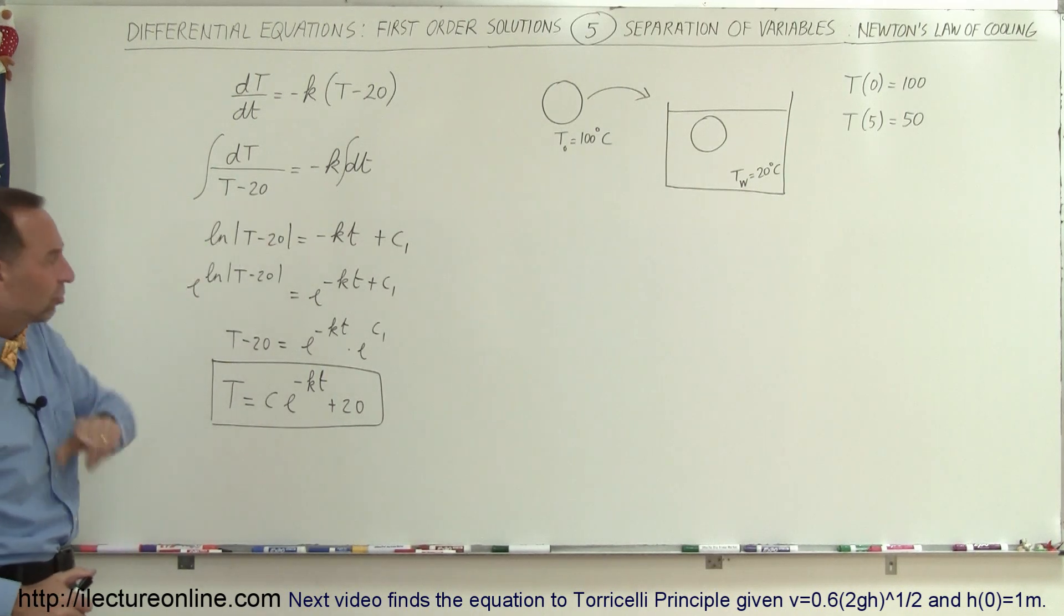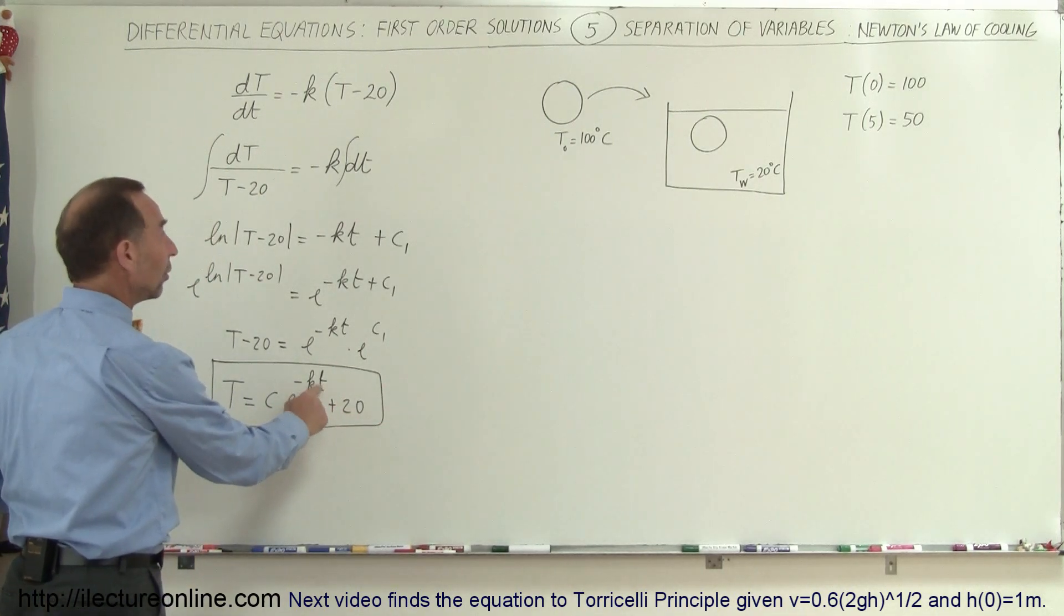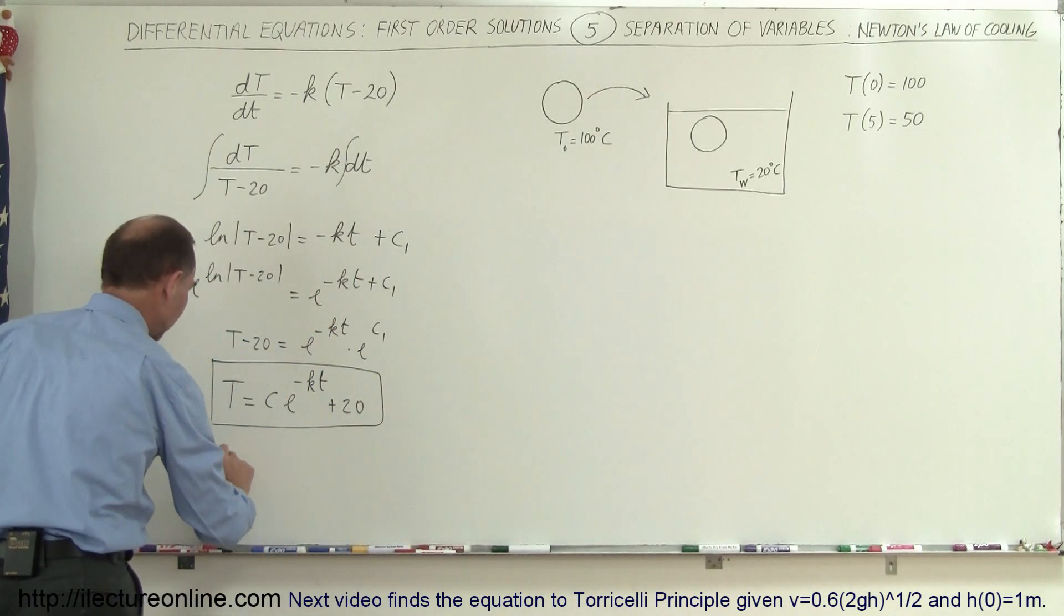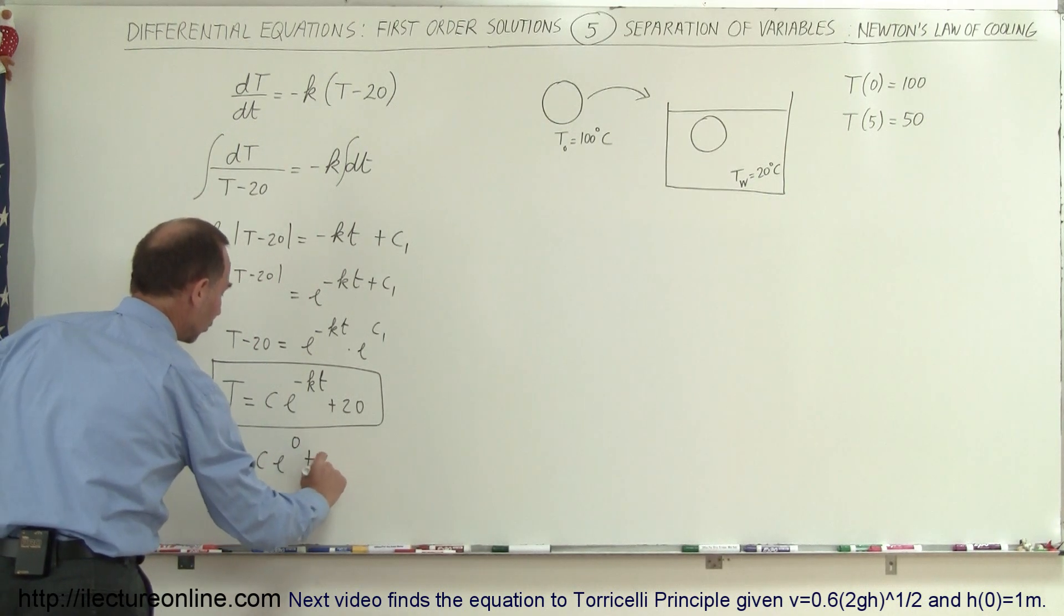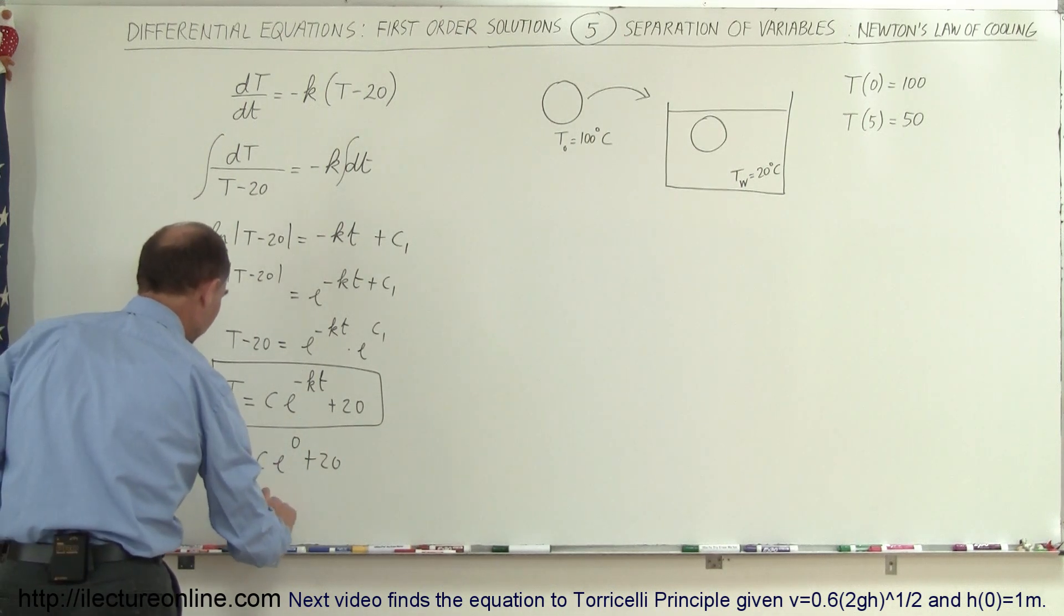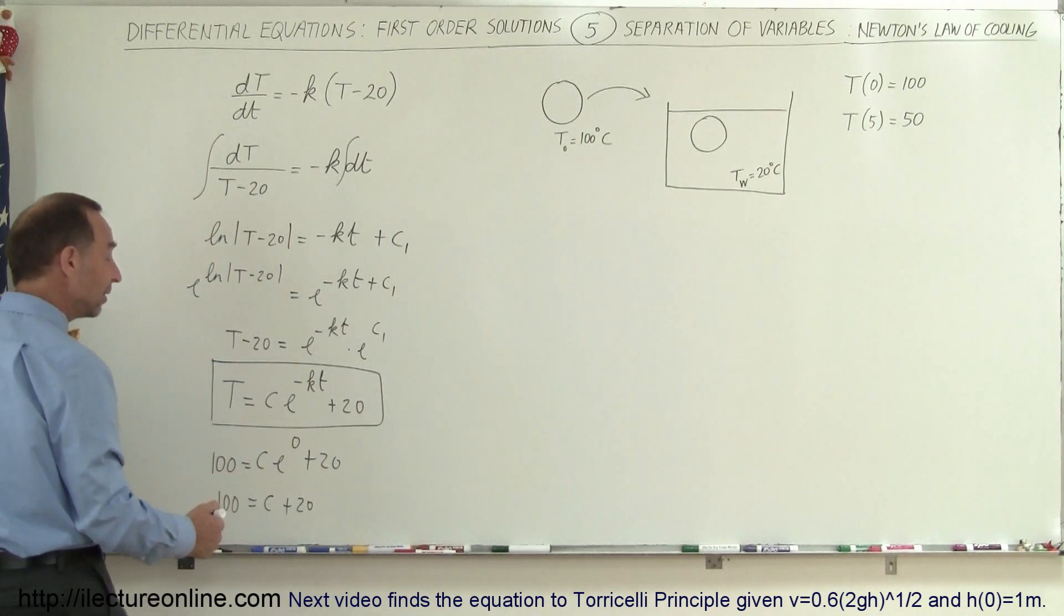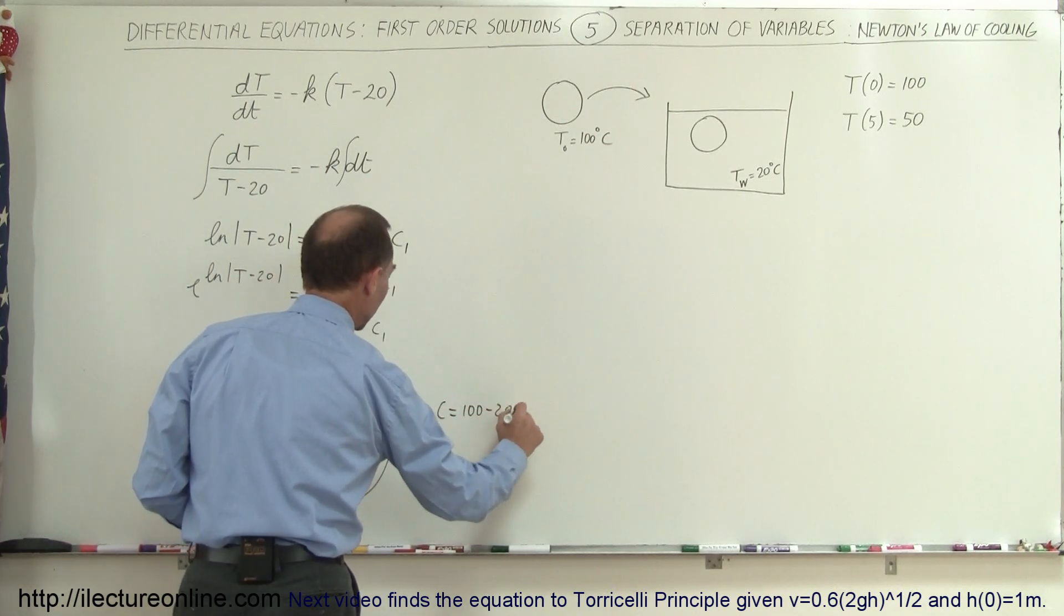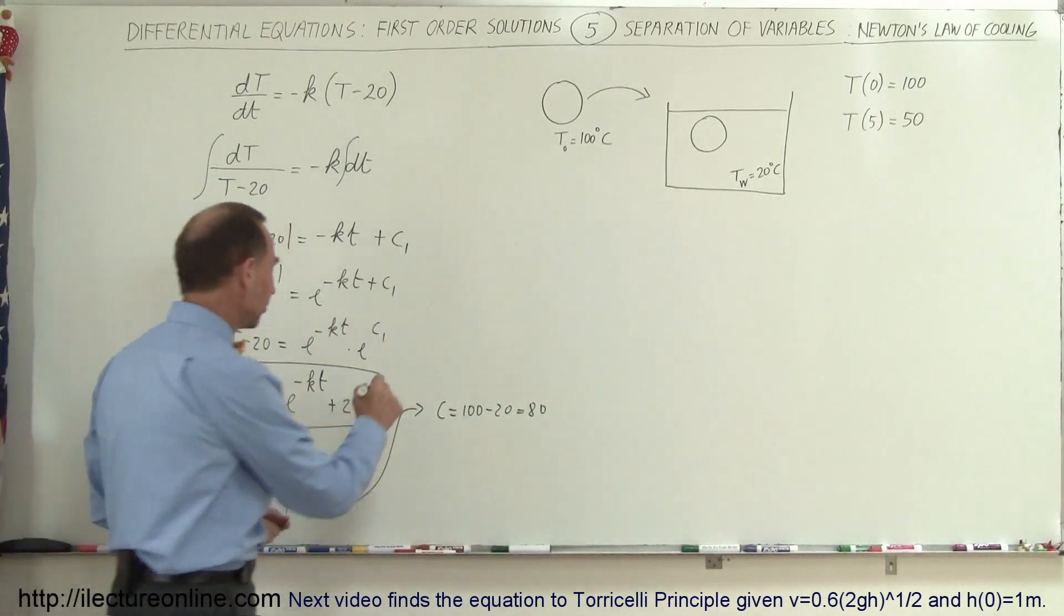We're going to use our initial condition to solve for C first. When we plug in the initial condition, when time equals zero, T equals 100. So 100 equals C times E to the zero plus 20. E to the zero is one, so 100 equals C plus 20. When I bring the 20 to the other side, C equals 80. C equals 100 minus 20, which equals 80.